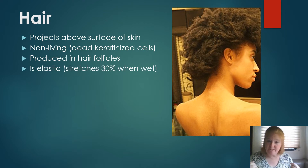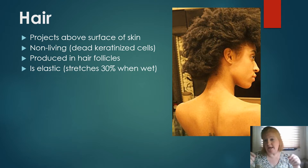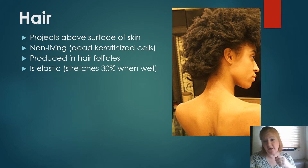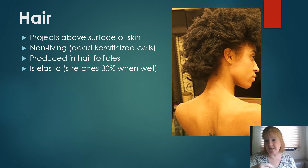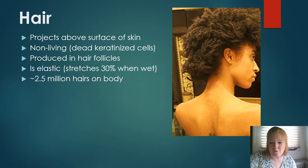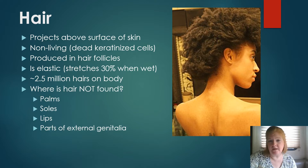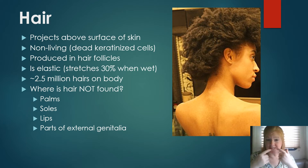Hair stretches about 30% when wet. There's an elastic test for hair where you wet a group of hairs and pull and stretch them. If the hair is healthy, it should bounce back. If it breaks or doesn't bounce back, it can indicate hair health issues. There are about 2.5 million hairs on your body. You do not find hair on the palms and soles, lips, and parts of your external genitalia.